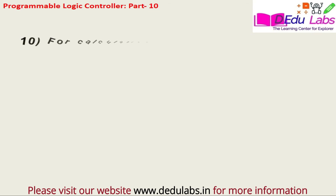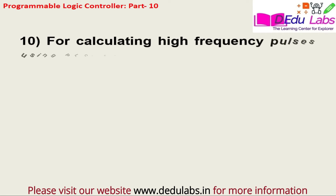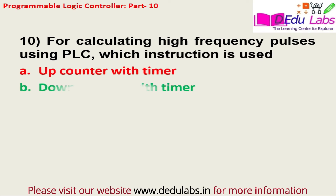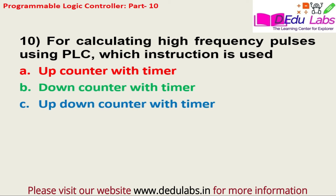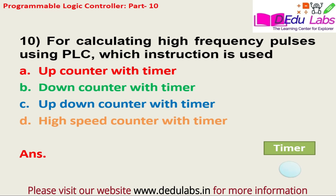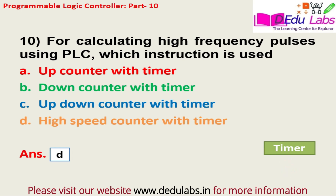Question number ten: For calculating high frequency pulses using PLC, which instruction is used? Option A, up counter with timer; option B, down counter with timer; option C, up down counter with timer; option D, high speed counter with timer. The answer is option D, that is a high speed counter with timer.